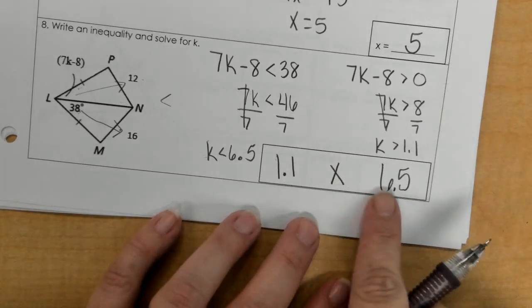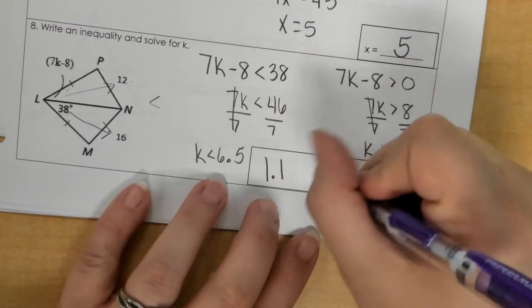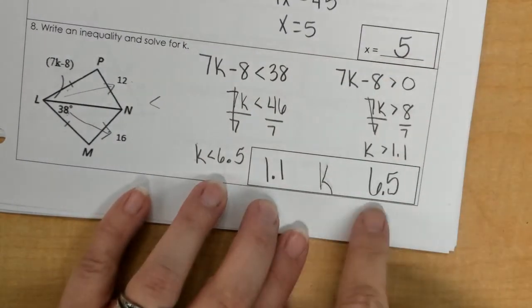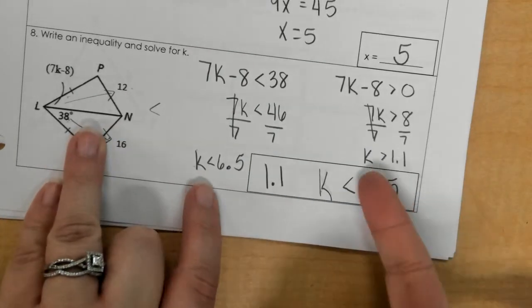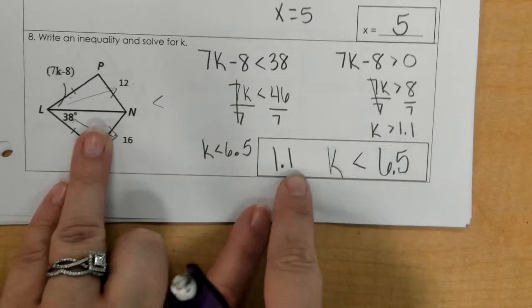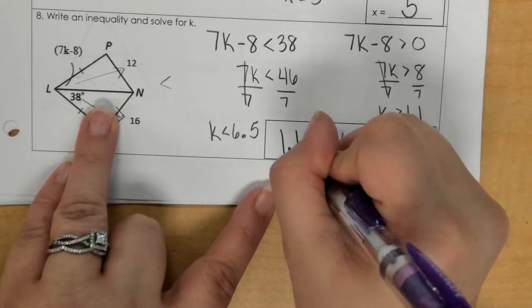So this part right here looks like this one. Oh, it's not an x, it's a k. So this is like this one, so I'm going to use less than, and then I flip this around. I flipped it around, so this becomes a less than as well.